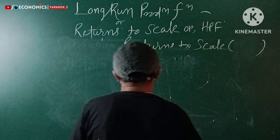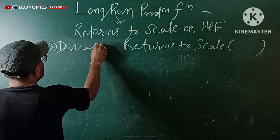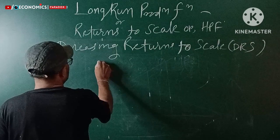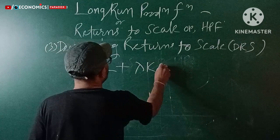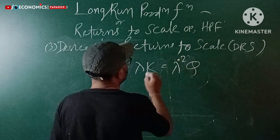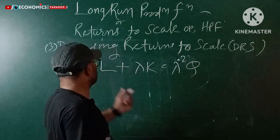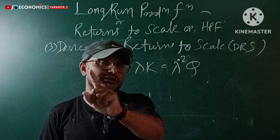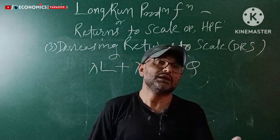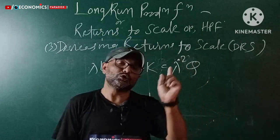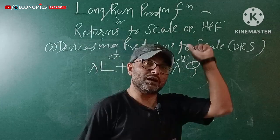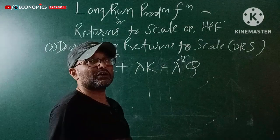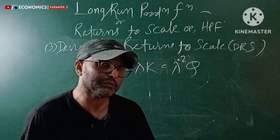Now for DRS — decreasing returns to scale — which is the opposite of IRS. In DRS, both factors increase by lambda times, but output increases less than lambda times. Both labor and capital increase by lambda times, but the output increases by less than lambda times.